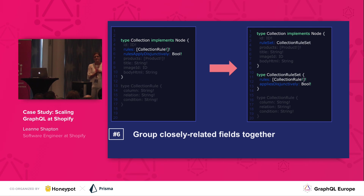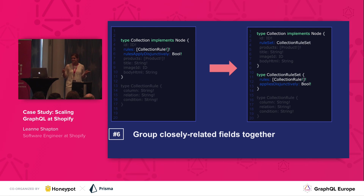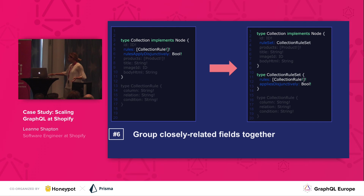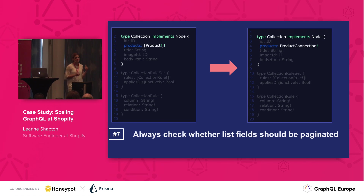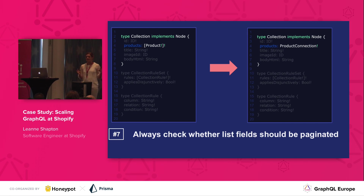Group closely related fields together into sub-objects. We notice that these two fields share the prefix 'rules,' which hints that their relationship can be indicated in our GraphQL schema. We're going to pull it out into its own type called CollectionRuleSet, where you have rules and applied disjunctively returning true or false — so now manual collections just won't have a rule set. The next field is products. Products returns a list of products, but collections can return tens of thousands of products, so this would be really inefficient. So we want to paginate here. It's important to look at your fields and check whether they should be paginated — our general guideline is if a list returns more than a dozen elements, you should paginate.